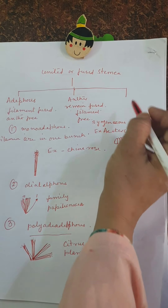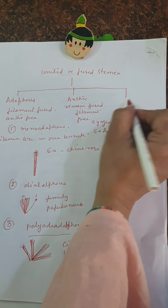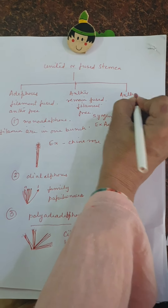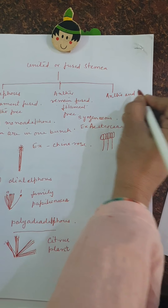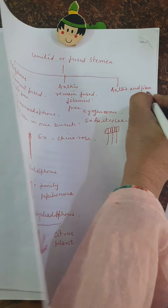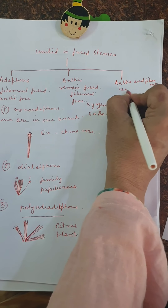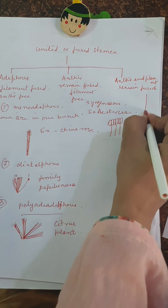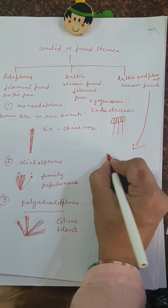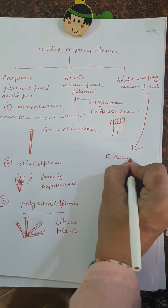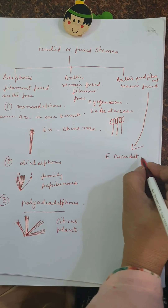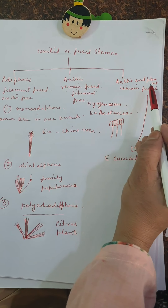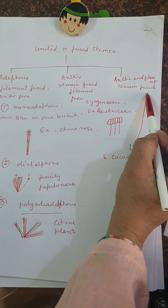The third type is synandrous, in which both the anther and filament are fused together. The whole anther and filament remain fused and united. An example of this is the family Cucurbitaceae.